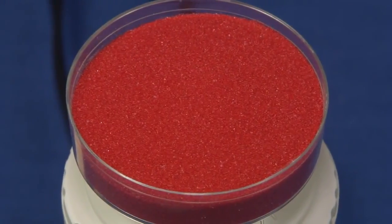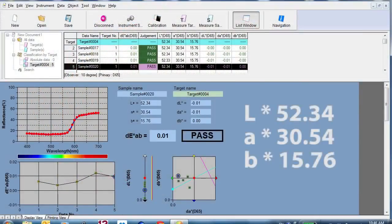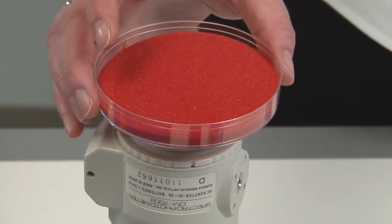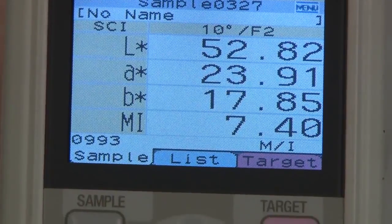In addition to improved efficiency, the CM700D's inter-instrument agreement allows users to communicate, share, and coordinate color values and specifications seamlessly throughout the supply chain.